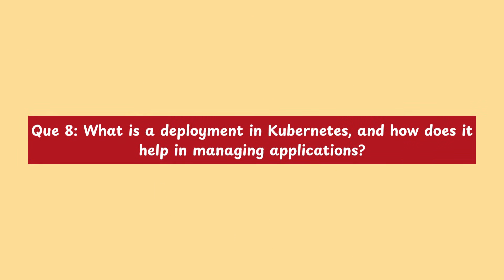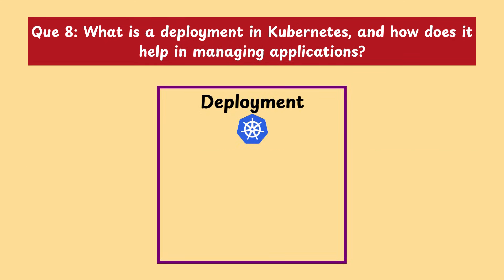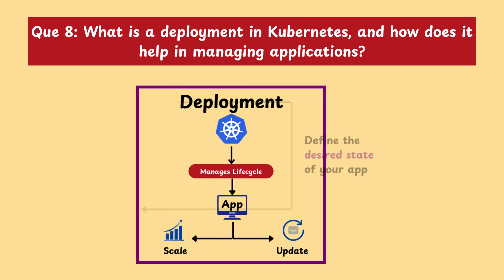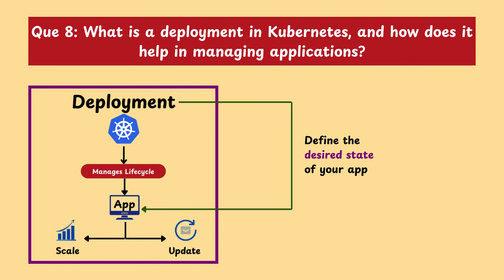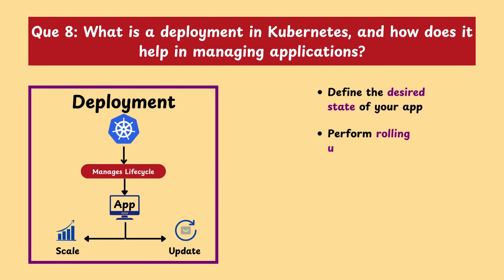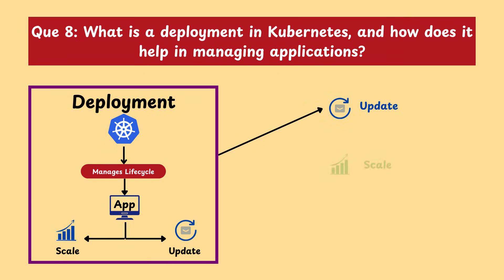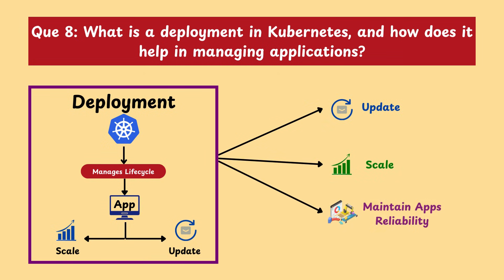Moving on with our next question: what is a deployment in Kubernetes and how does it help in managing applications? A deployment in Kubernetes is a controller that helps you manage your application's lifecycle. It allows you to define the desired state of your application, like how many pods to run. It also allows you to perform rolling updates without any downtime, as Kubernetes updates pods one by one. It also allows you to roll back to a previous version if something goes wrong. In short, a deployment makes it easy to update, scale, and maintain your application reliably.